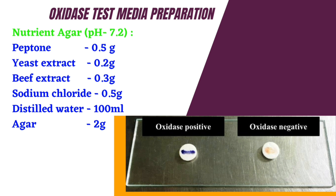This is the oxidase-positive organism result versus the oxidase-negative organism result using the disc method. The test organism inoculum is placed on the disc. For an oxidase-positive organism, the disc changes to purple color. For a negative organism, there is no color change.